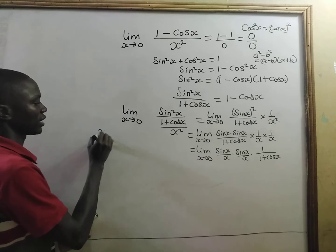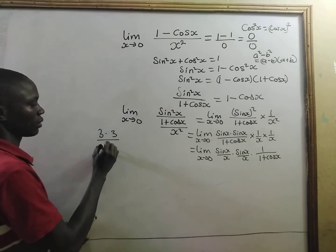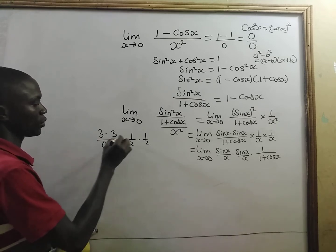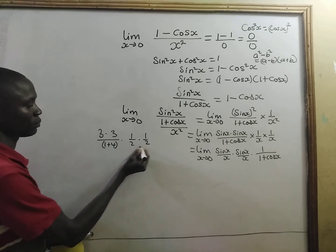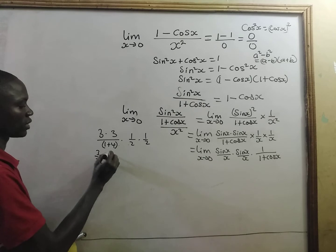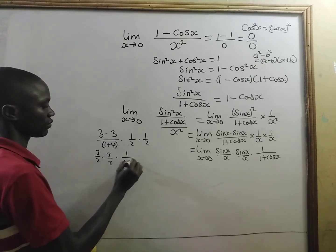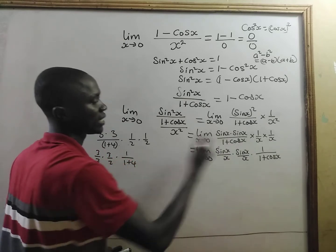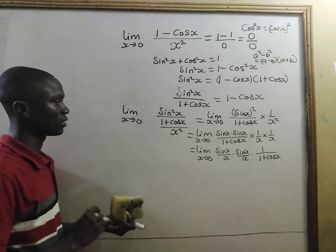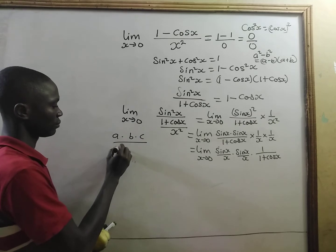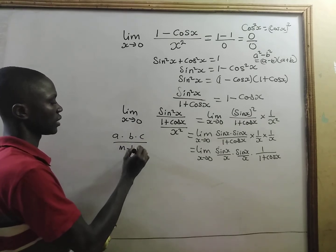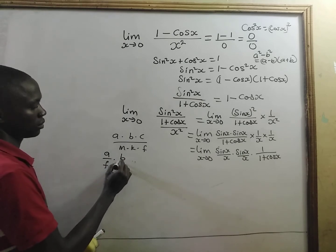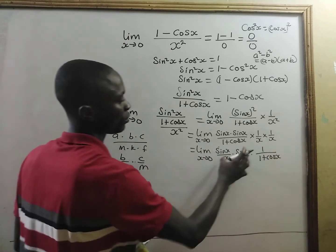Let's say that we have 3 times 3 divided by 1 plus 4 times 1 on x times 1 on x. You see that we are multiplying. Since we are multiplying, we can just take 3 on x times 3 on x, then factorize 1 on 4 to come out, giving 1 plus 4. That's what we have done here. So you can just interchange the positions: a times b times c divided by m times k times f gives you a on f times b on k times c on m. That's what we have done here.